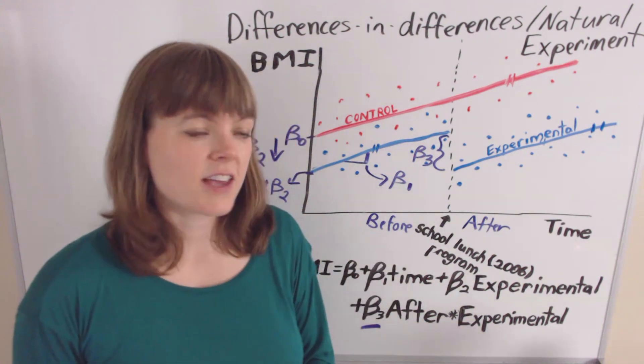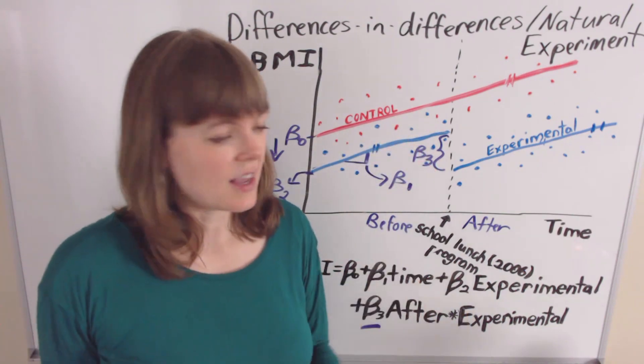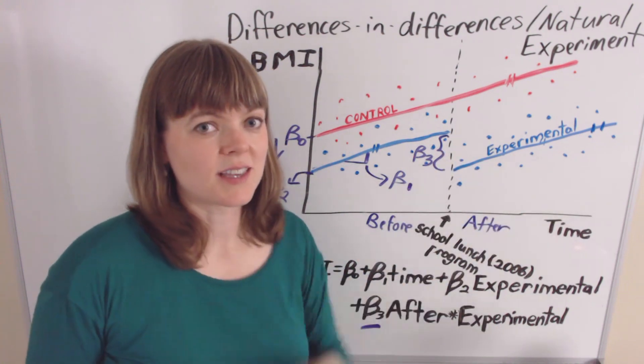But it's still a pretty good identification strategy. If beta 3 is significant, that still is a decent case that our program caused some effect that we're seeing in the data.